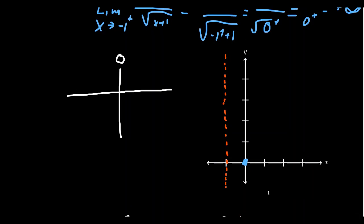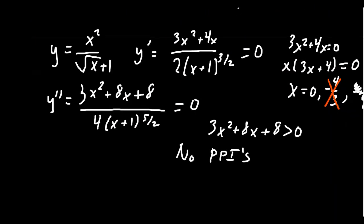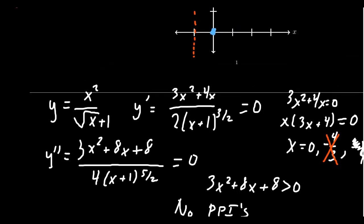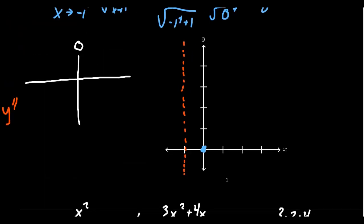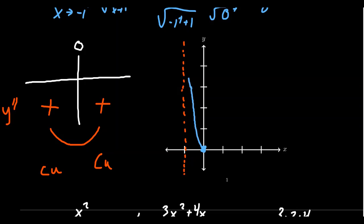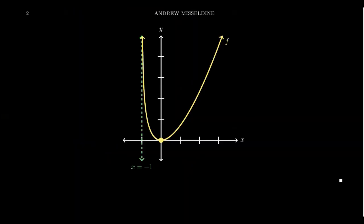The second derivative — 3x squared plus 8x plus 8 over 4 times x plus 1 to the five-halves — is always positive throughout the domain: the numerator is always positive, the 4 is always positive, and x plus 1 is positive for x greater than negative 1. So the graph is always concave up, which means x equals 0 gives us a local minimum. The graph rises toward infinity near the vertical asymptote at x equals negative 1, and also goes to infinity on the right. A computer-generated image confirms we had a pretty good picture.